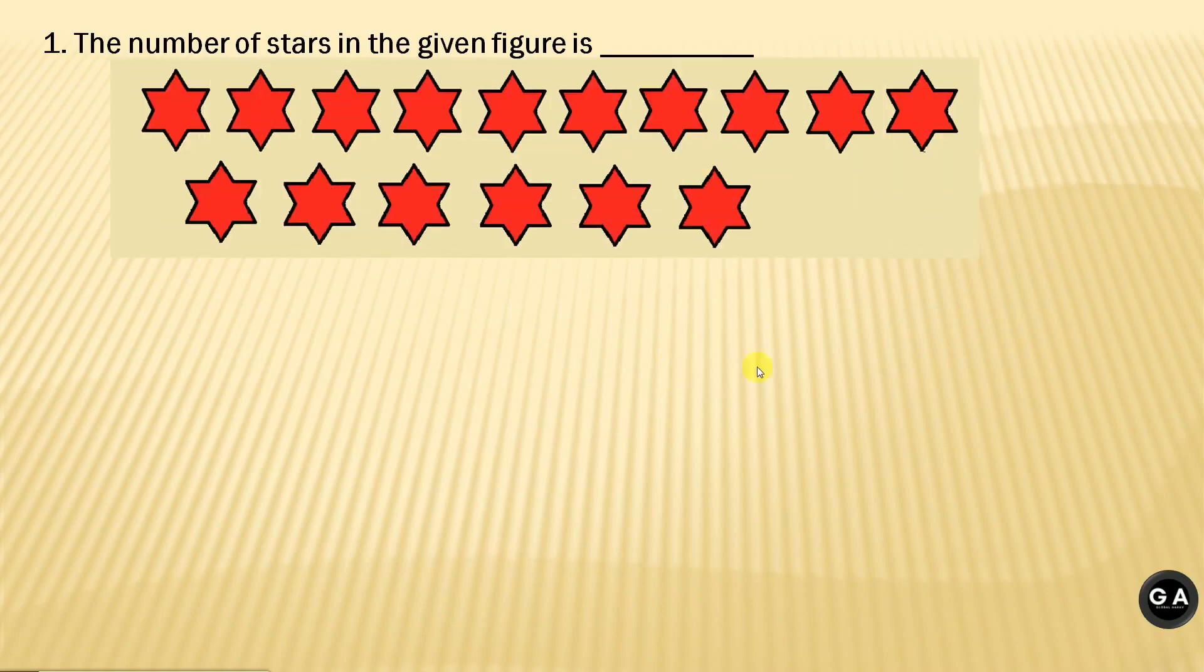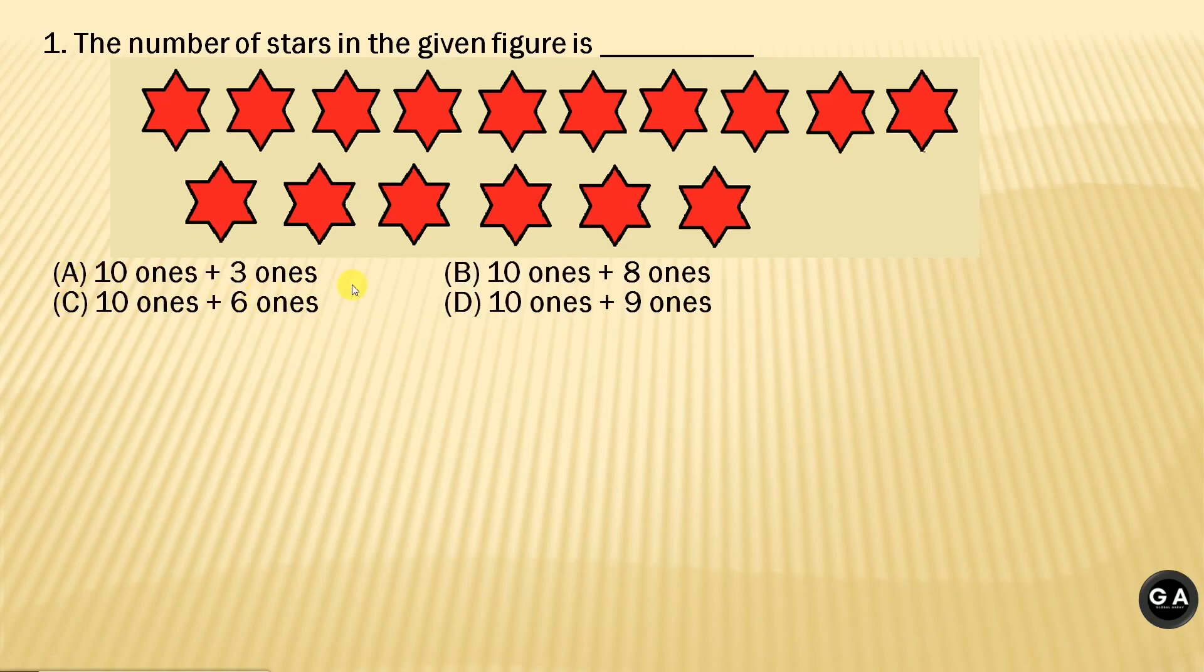Question number 1. The number of stars in the given figure is... the stars are mentioned on the screen. Options are: option A, 10 ones plus 3 ones; option B, 10 ones plus 8 ones; option C, 10 ones plus 6 ones; and option D, 10 ones plus 9 ones. To solve this question, first we need to count the stars. Let's count.